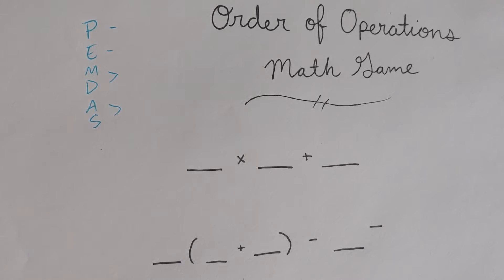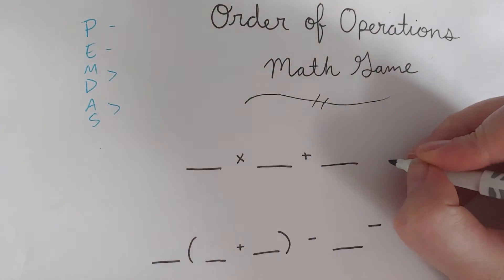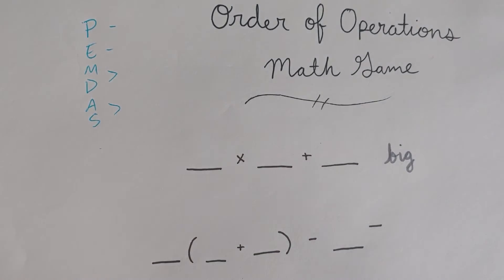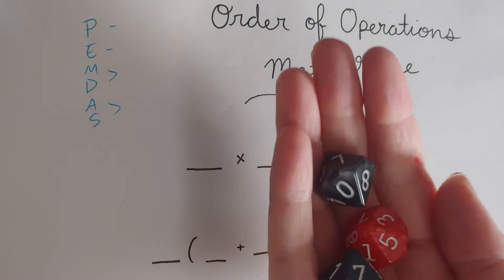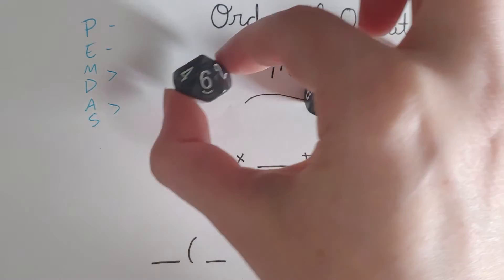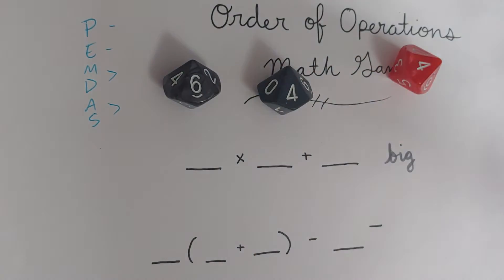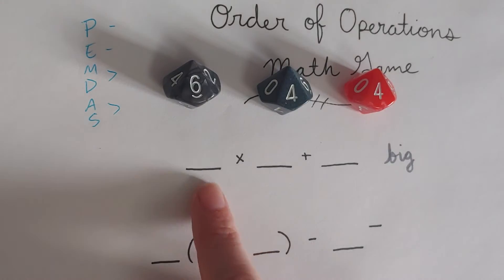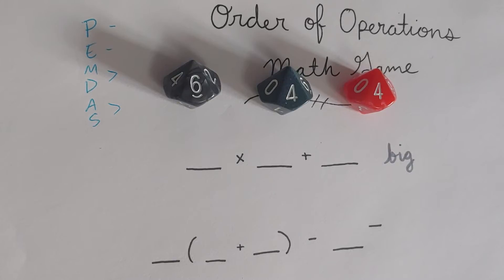Then you're gonna have to decide: is your goal the biggest or the smallest answer? I'm gonna say our goal is biggest. We're gonna see what the largest answer we can get using this equation and whatever I get on these three dice. I have a six and a four and another four. This is the place where if you're playing with someone else, they would roll their own set of dice and do the same thing at the same time as you. If you're doing this on your own, just make some examples and see what would be largest.